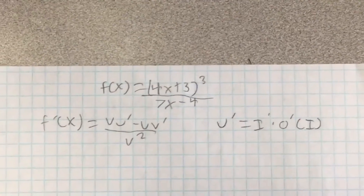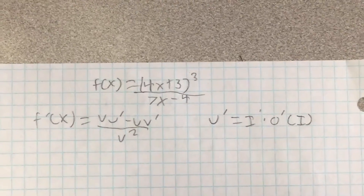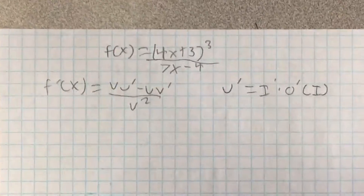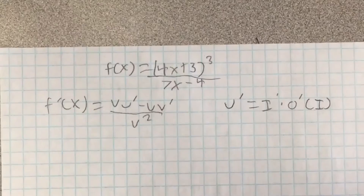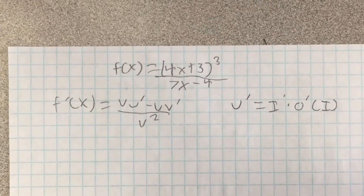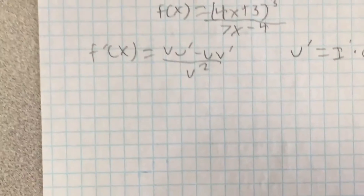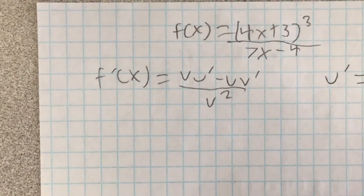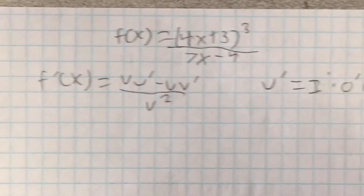Today I'll be doing quotient rule with the chain rule inside. For this we'll be using the quotient rule formula, which is f prime of x equals v times u prime minus u times v prime over v squared.